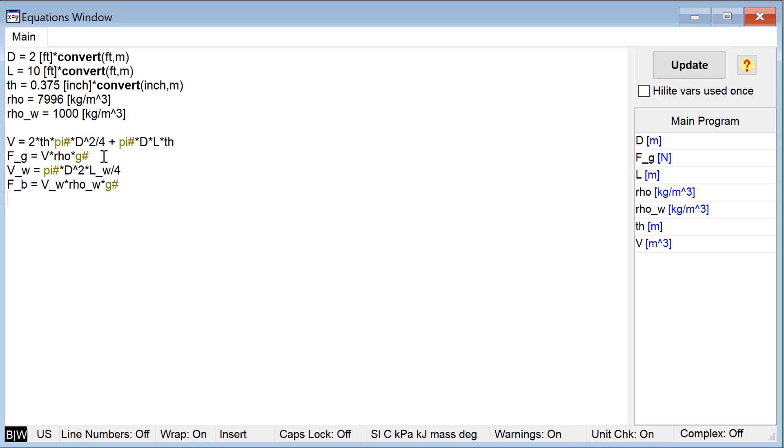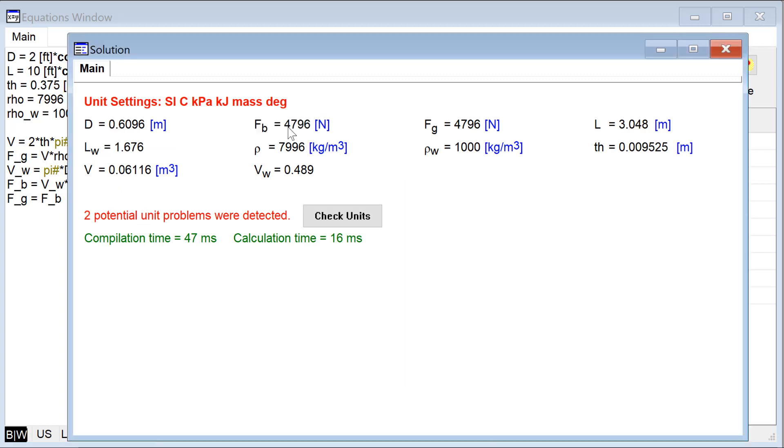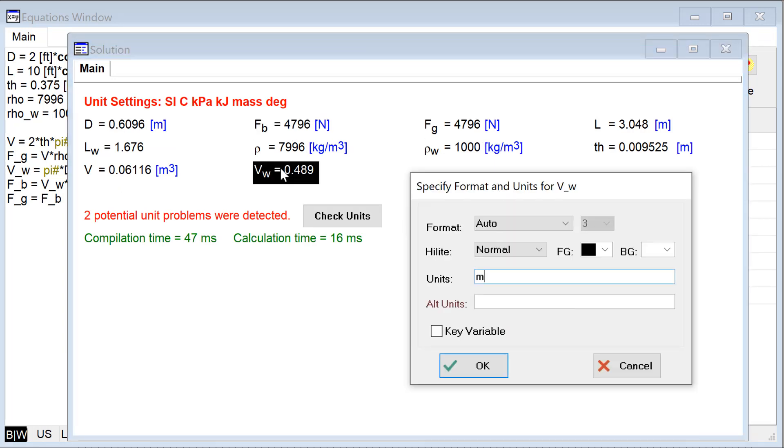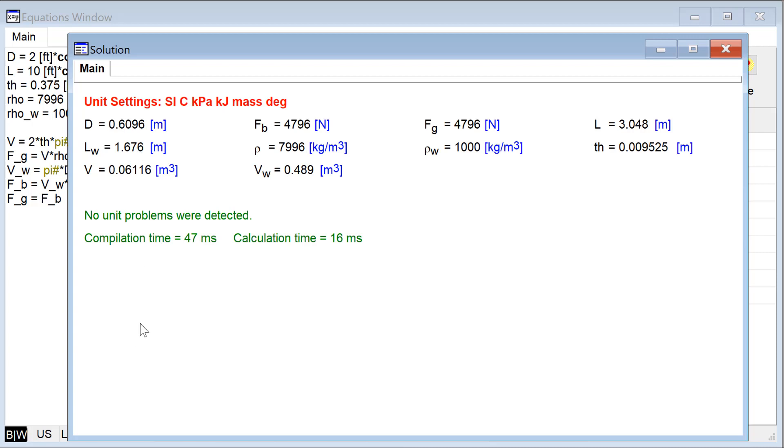Once I have all three of them entered, I can solve them. I can set the units of all of these variables and make sure that all of my equations are unit consistent. And then finally, I can look at the answer, which is this submersion length.